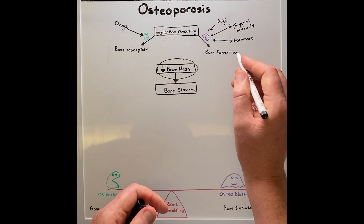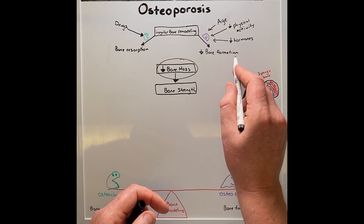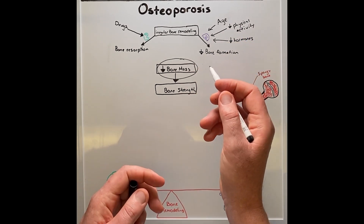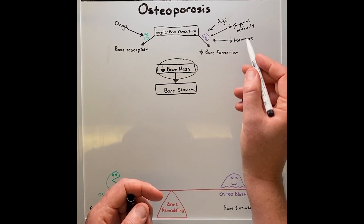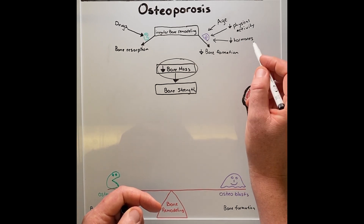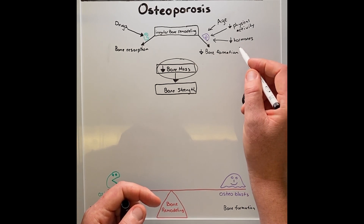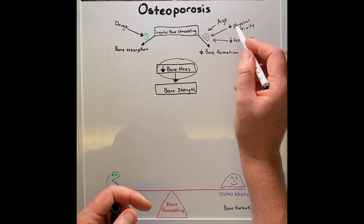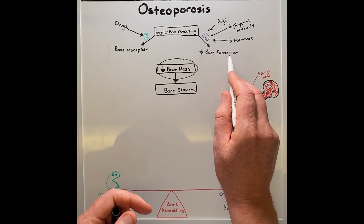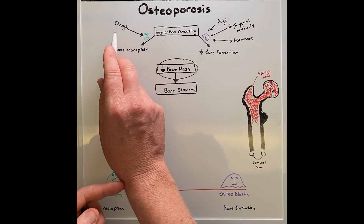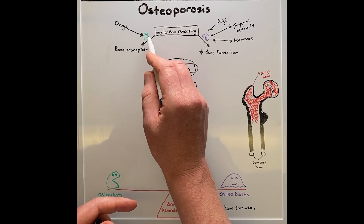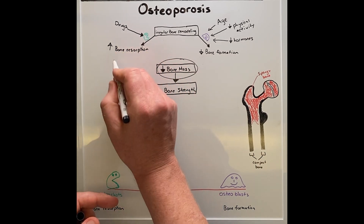Risk factors include an increase in age — 50-year-olds for females, 65 for males — a reduction in physical activity, and a reduction in hormones such as estrogen, which can be seen in post-menopausal states. All these together reduce the activity of osteoblasts, therefore decreasing bone formation, while certain drugs such as glucocorticoids and smoking increase the activity of osteoclasts, which increases bone reabsorption.